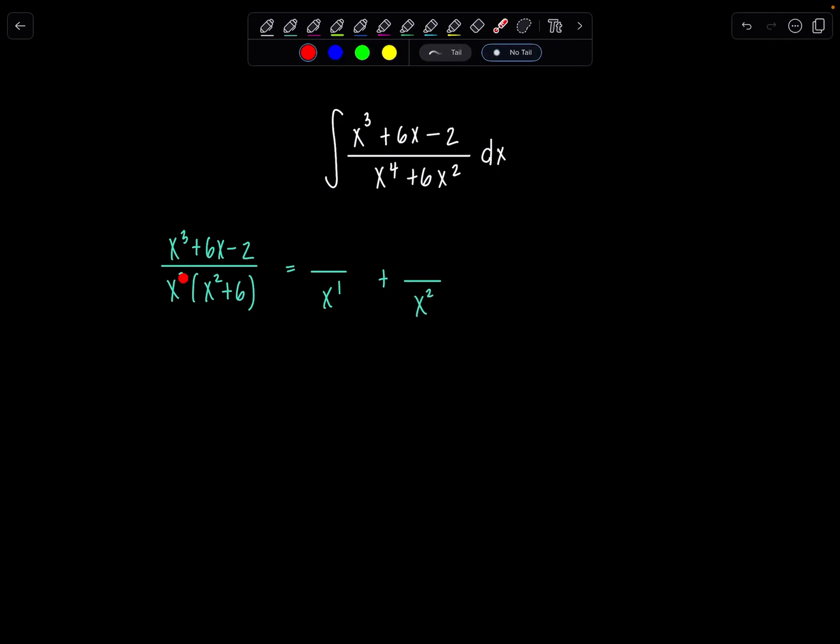And say had this been x cubed, I would also put plus x cubed in the bottom. You start at degree 1 and then work your way up to whatever you see. But we're done with those two. And then I still have to add in now x squared plus 6.